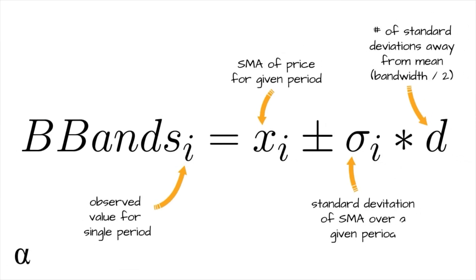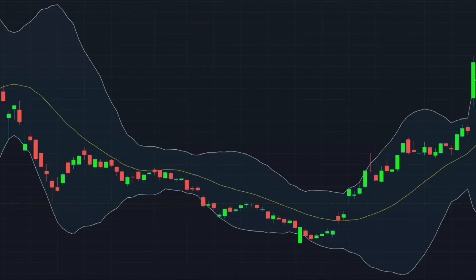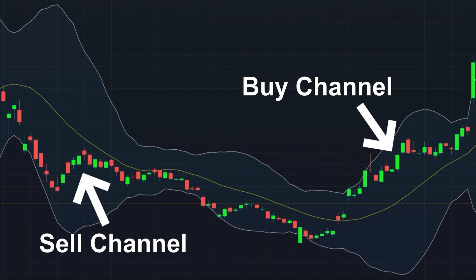Of course, when working with Bollinger Bands it is not necessary for you to calculate standard deviations yourself. You only need to understand the theory of how standard deviation sets the range for a dispersal of rates when compared to the moving average, and how this information is used to determine buy and sell channels in the chart.